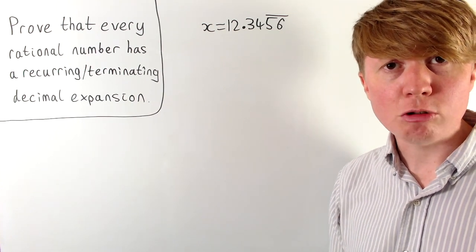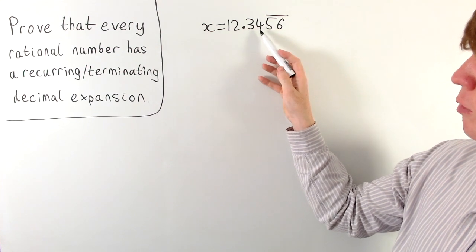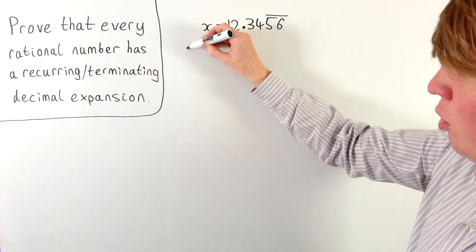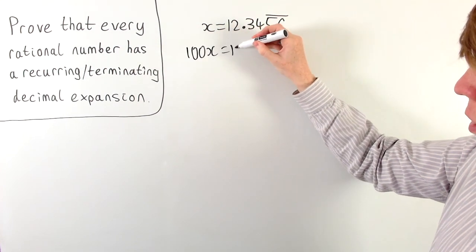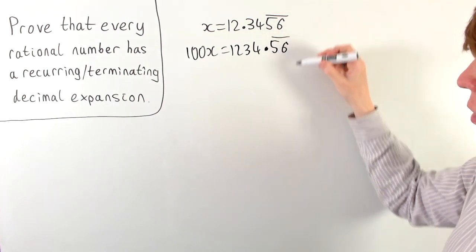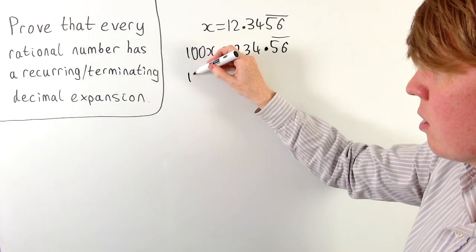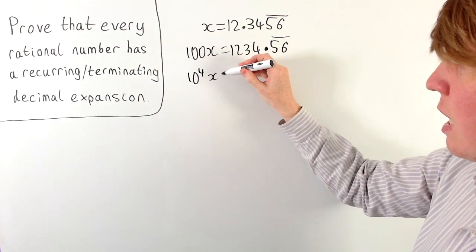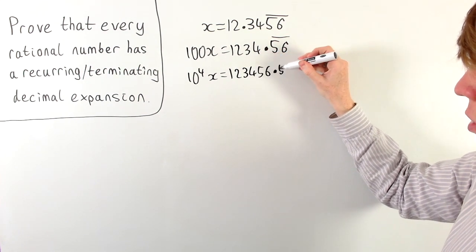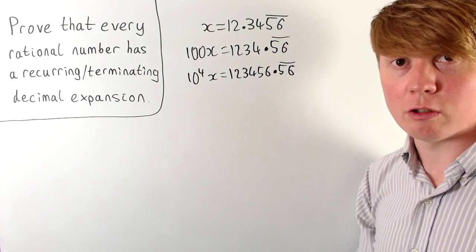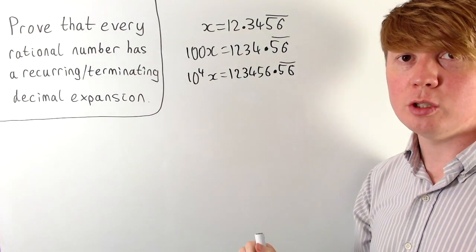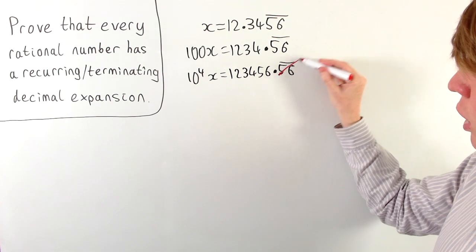Let's quickly look at this trick with this example where we've got 12.34 and the 5.6 part is recurring. The first thing we'll do is multiply this by 100 so that our non-recurring part is all an integer, giving us 1234.56 recurring. Then if we multiply by 100 again, we'll write this as 10 to the 4 times x, or 10,000x, then we get 123456.56 recurring. So we've got the 5.6 recurring again. And now we're in a position to subtract 100x from 10 to the 4 times x to get rid of our recurring part.